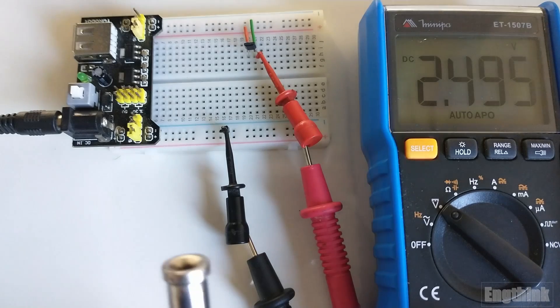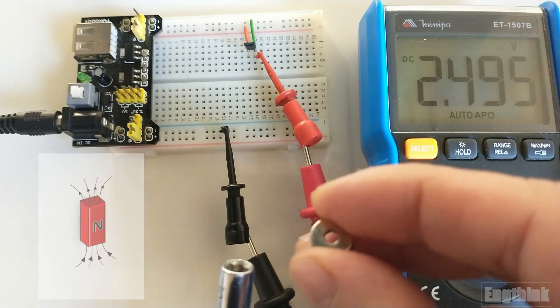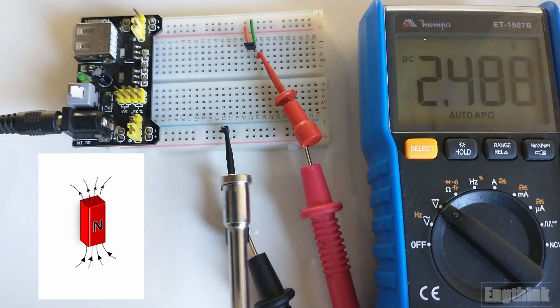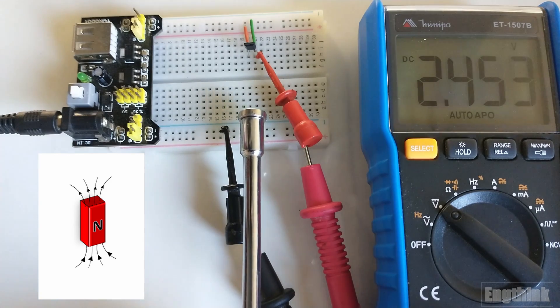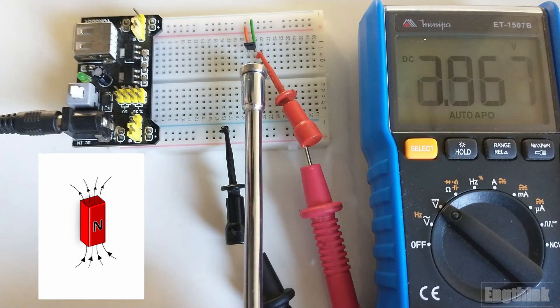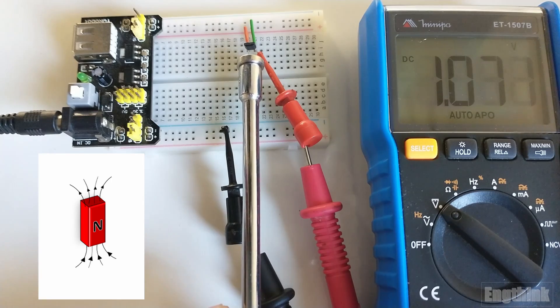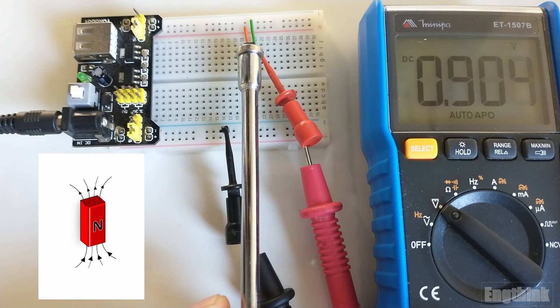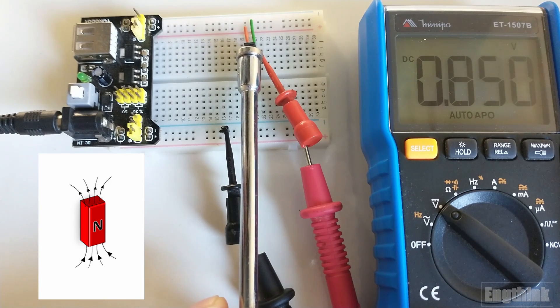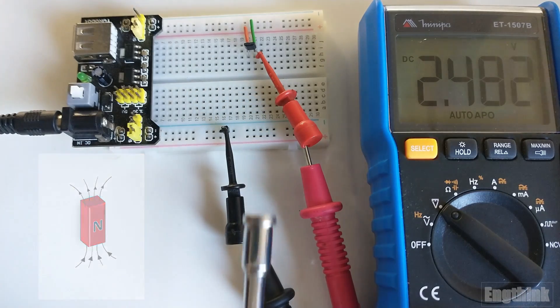The next test involves inverting the magnetic pole of the magnet. We will now approach the Hall effect sensor with the flat surface of the magnet, representing the magnetic north pole. As we approach slowly, we observe the voltage starting to decrease below 2.5 volts, continuing to decline until it reaches the minimum saturation point, which is around 0.8 or 0.75 DC volts. Finally, when we remove the magnet from the front of the sensor, the voltage starts to increase until it reaches the initial condition of 2.5 volts DC.